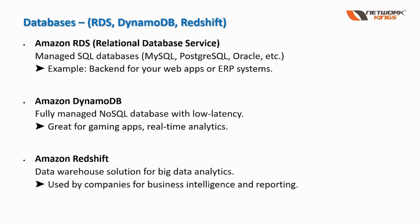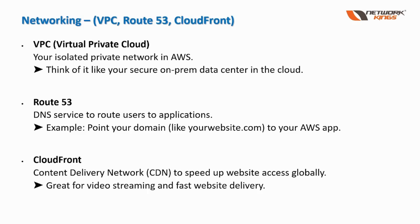Redshift is the data warehouse solution for big data analytics. It is used by companies for business intelligence and reporting purposes. VPC, or Virtual Private Cloud, is an isolated network in AWS — you can create a private isolated network within an AWS region.